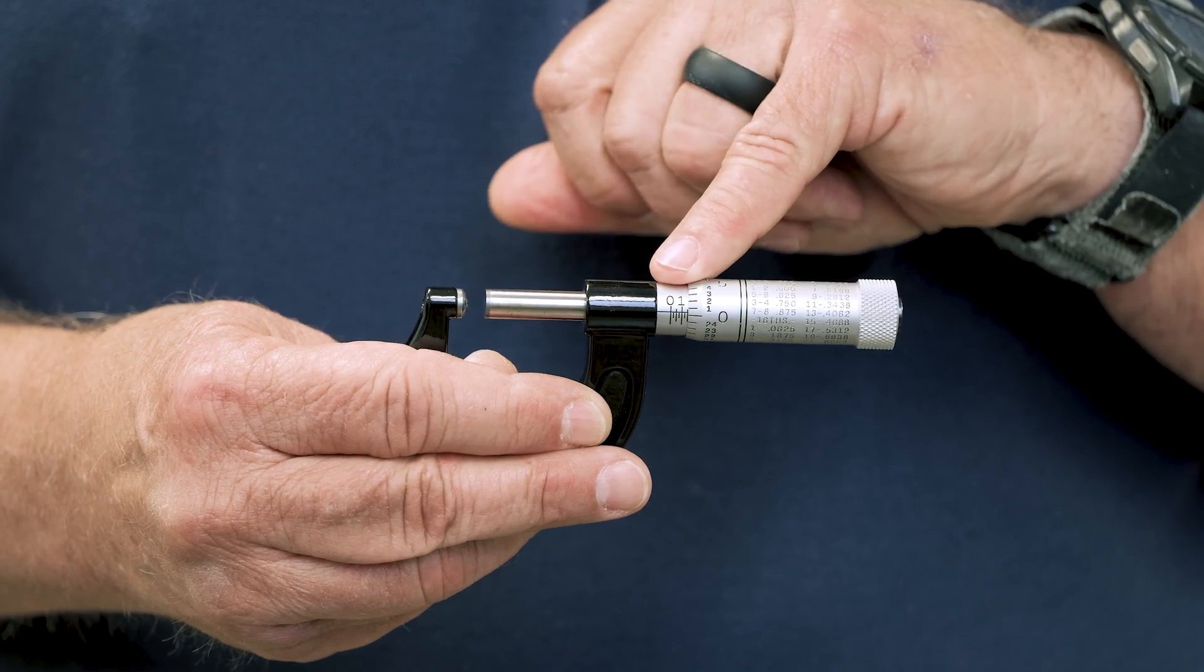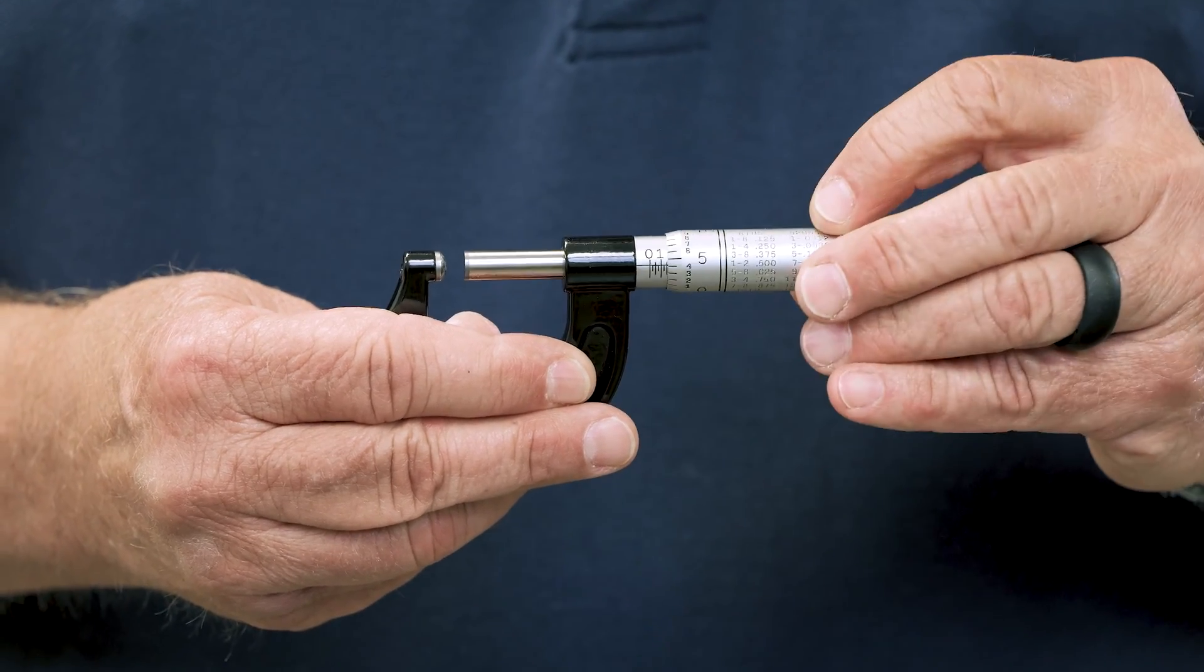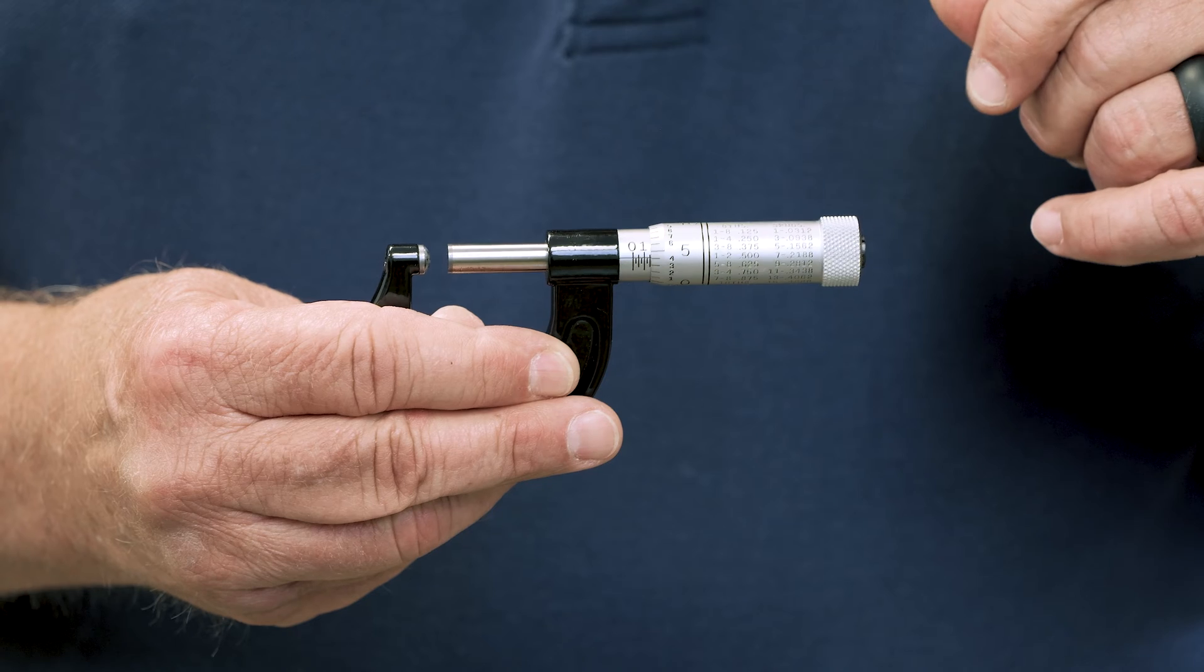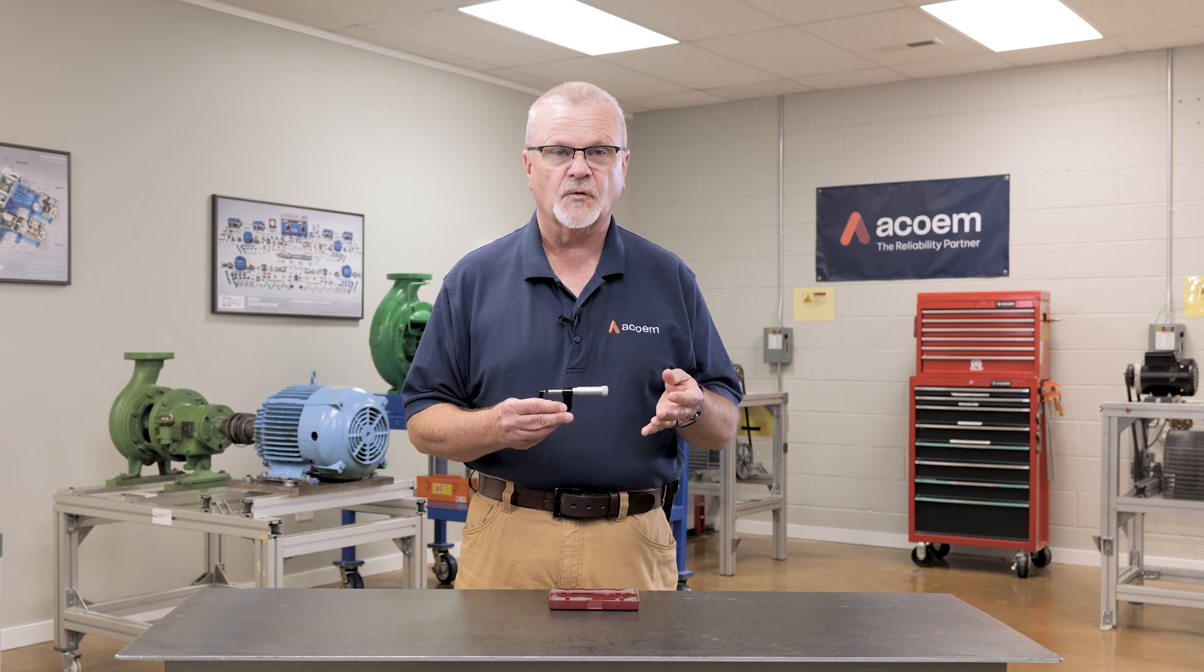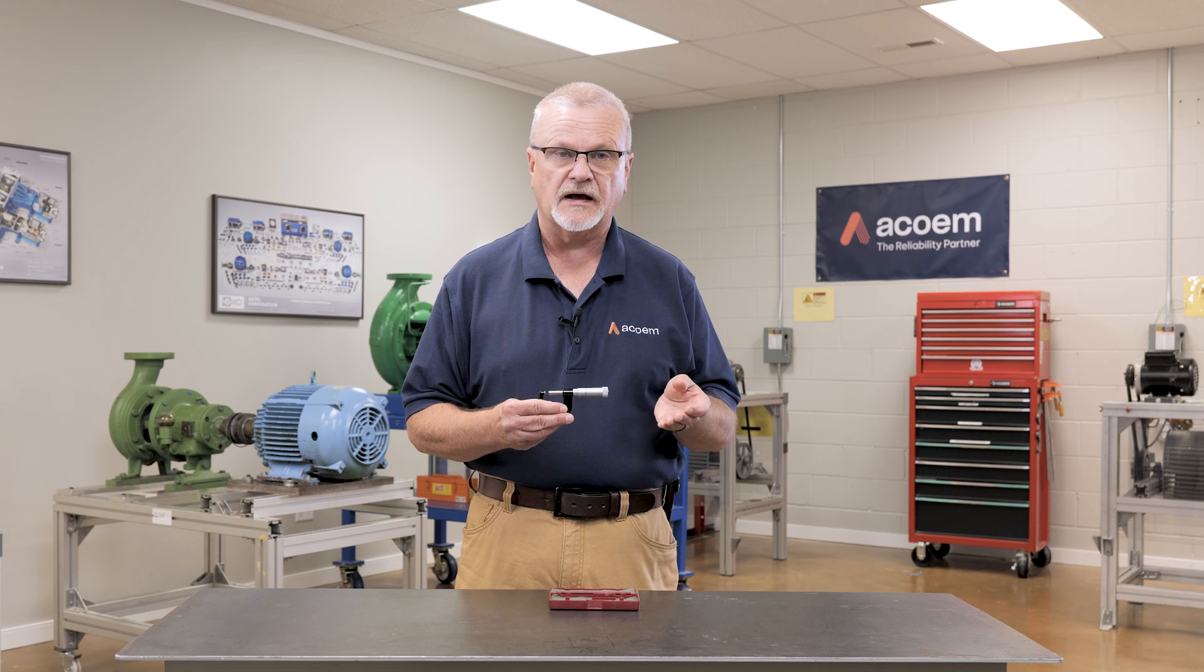And there are graduations both on the stationary and the movable side of the micrometer that give you those dimensions. So I want to show you a little more about these marks and dimensions and how this works.